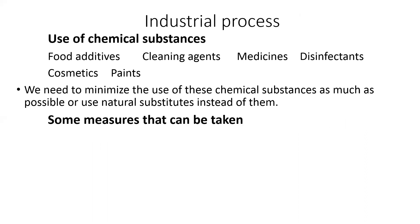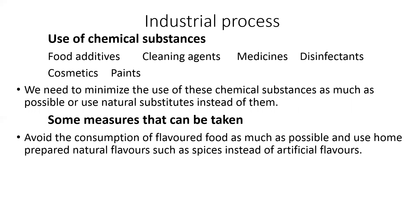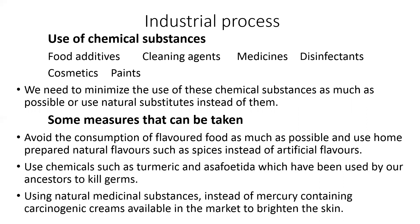Some measures that can be taken: avoid the consumption of flavored food as much as possible and use home-prepared natural flavors such as spices instead of artificial flavors. Use chemicals such as turmeric and asafoetida, which have been used by our ancestors to kill germs. Use natural medicinal substances instead of mercury-containing carcinogenic creams available in the market to brighten the skin.